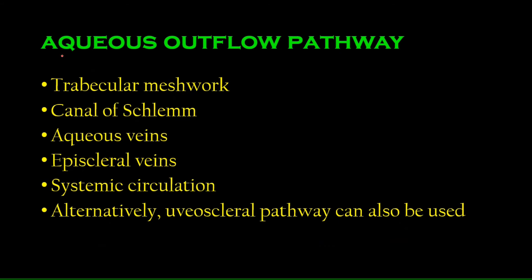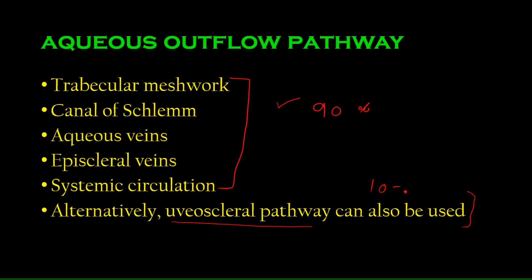The outflow pathway is very important because pathologies are related to it. There are two pathways through which aqueous humor exits. The first pathway handles 90% of the drainage, while the second — called the uveoscleral pathway — drains about 10 to 15%. The major pathway consists of four components: the trabecular meshwork, canal of Schlemm, aqueous veins, and episcleral veins.